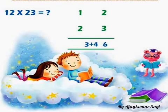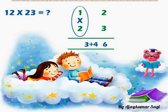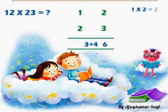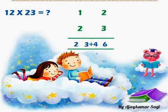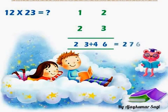Now come to the left side vertical digits. Multiply the left side vertical digits — that is 1 into 2 — 1 into 2 we get 2, place 2 here. So the answer is 2, 7, 6 — because 3 plus 4 gives us 7.